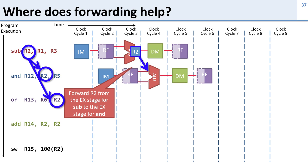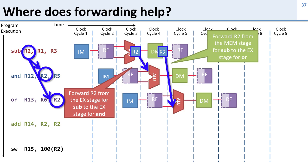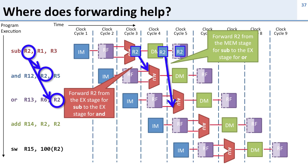Now let's look at the OR instruction. The data for OR is available — it's sitting at the end of the memory pipeline stage — but we need to forward it from the memory pipeline stage to the ALU. So if we can forward R2 from the memory stage of the subtraction instruction to the execute stage of the OR instruction, we don't need to delay execution. For the remaining instructions like ADD and store word, by clock cycle 5 the value is already written to the register file, so they can access it directly. Forwarding eliminates the need for stalls on the AND and OR instructions.